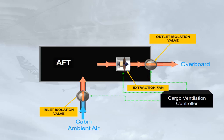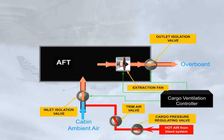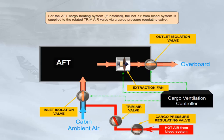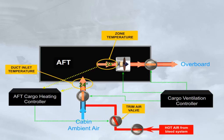For the aft cargo heating system, if installed, hot air from the bleed system is supplied to the related trim air valve via a cargo pressure regulating valve. The aft cargo heating controller controls the related trim air valve and monitors the related duct inlet and zone temperatures. Compartment heating is not available when the aft cargo door is open, or when the cargo pressure regulating valve is closed.